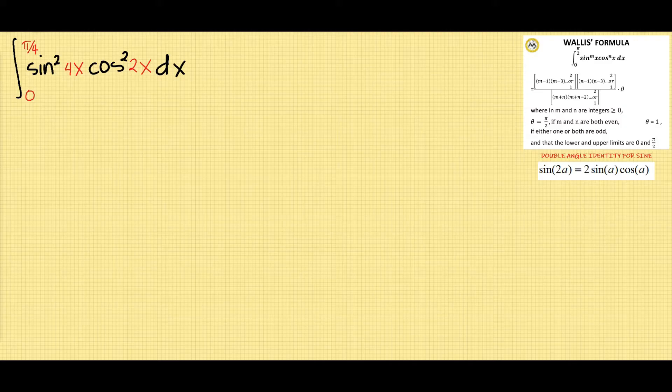To use the Wallis formula, we first make sure that the upper bound is pi half and the lower bound is zero. Also, the angles of sine and cosine must be the same. However, in this case, our upper bound is pi over 4 and their angles do not equal.